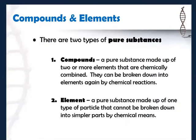There are two types of pure substances: compounds and elements. First, compounds — a pure substance made up of two or more elements that are chemically combined in chemical reactions. They can be broken down into elements again by chemical reactions. Second, elements — a pure substance made up of one type of particle that cannot be broken down into simpler parts by chemical means. We today will start with the study of elements.